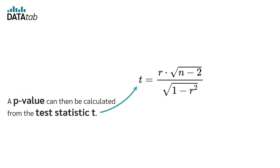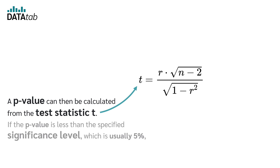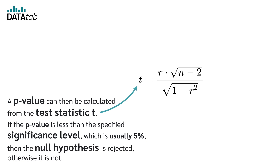A p-value can then be calculated from the test statistic t. If the p-value is less than the specified significance level, which is usually 5%, then the null hypothesis is rejected. Otherwise, it is not.